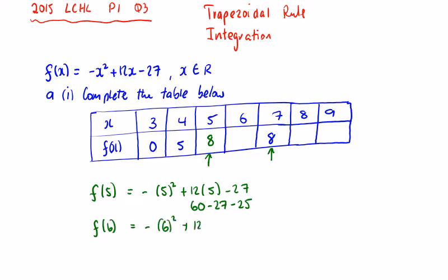f(6) is equal to minus 6 squared plus 12 times 6 minus 27. So we're going to have 72 minus 27 minus 36, which gives me 9. And we'll just double check: f(8) should give me 5 and f(9) should give me 0 because it's a quadratic.